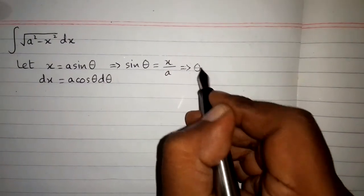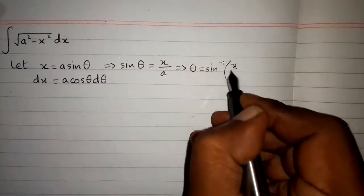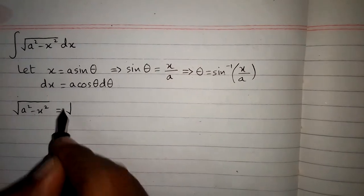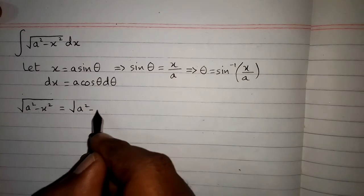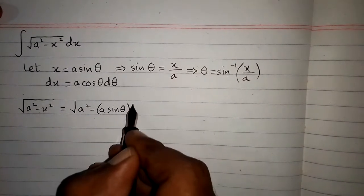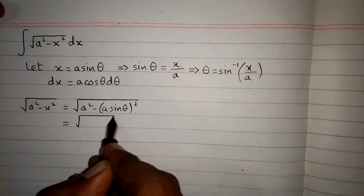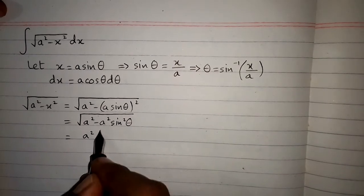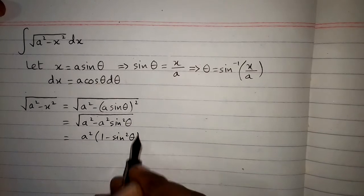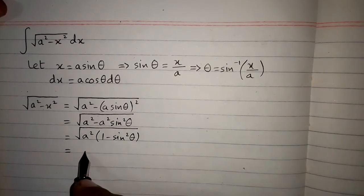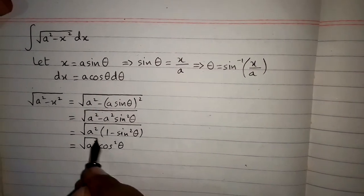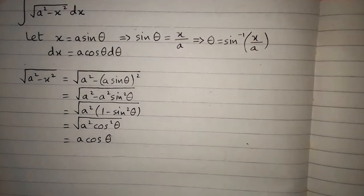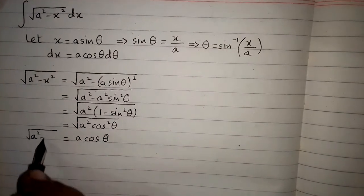Then we can find the value of theta, which is sine inverse of x upon a. Now, square root of a squared minus x squared equals the square root of a squared minus a sine theta squared, which simplifies to the square root of a squared times one minus sine squared theta. Since one minus sine squared theta equals cosine squared theta, the square root of a squared is a and the square root of cosine squared is cosine.